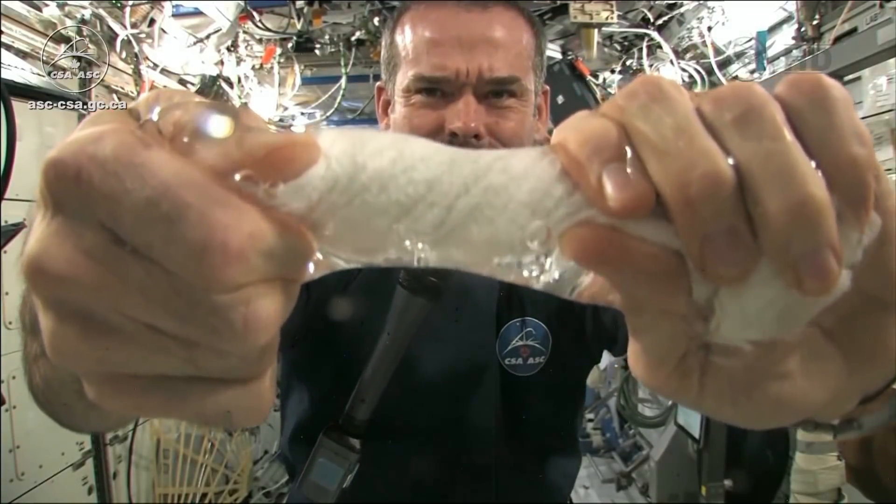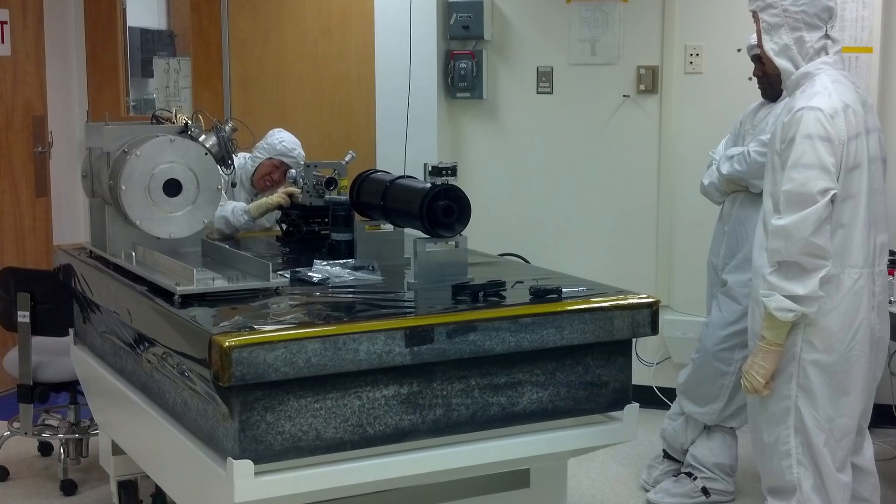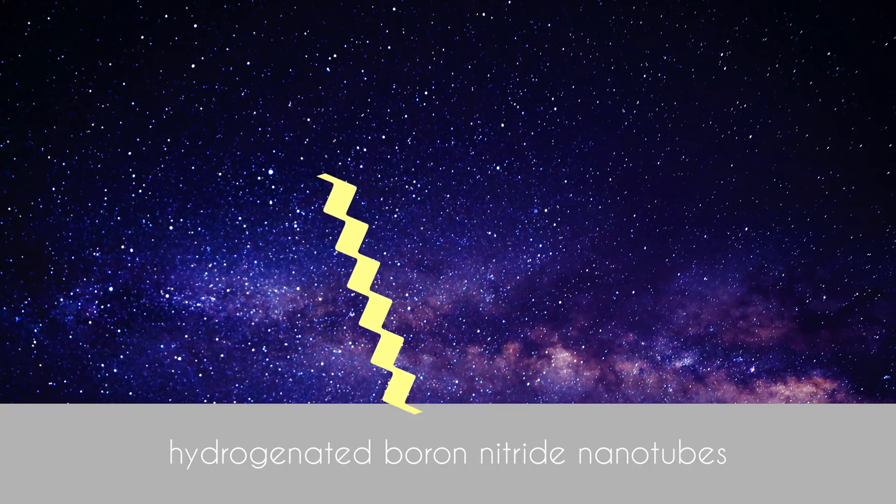To combat the latter, which is a huge issue for this type of mission, NASA is using nanotechnology to develop a new material called hydrogenated boron nitride nanotubes. Try saying that three times fast: hydrogenated boron nitride nanotubes, hydrogenated boron nitride nanotubes, hydrogenated boron nitride nanotubes. Those could be quite effective shields from harmful cosmic radiation.